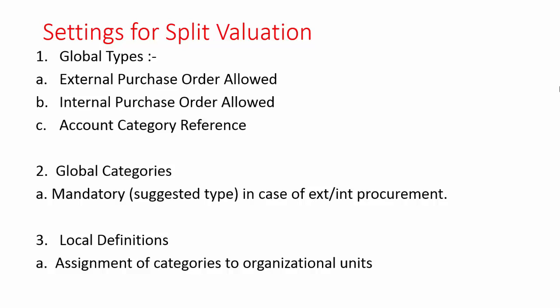I will explain you about the customizing setting for split valuation. The first one is global types, the second one is global categories, and the third one is local definitions. In global types, we are supposed to create the different valuation types like external, internal, and other valuation types. In the second case, we are supposed to create the valuation category, wherein we are going to assign the valuation types to these categories. And in the third case, we are going to assign the categories to the organizational units like plant — meaning we activate the global category on the plant. So when you create the material in that plant and select a specific valuation category, the system will allow you to extend the material on the valuation types.